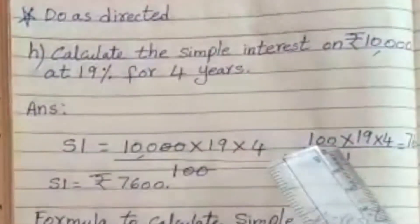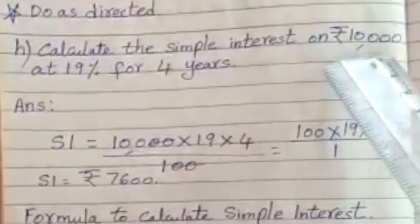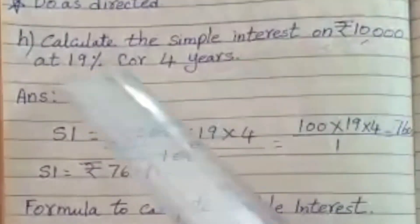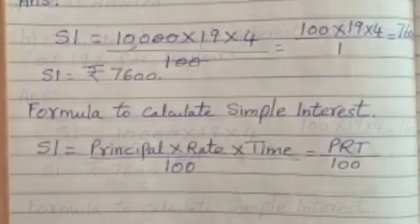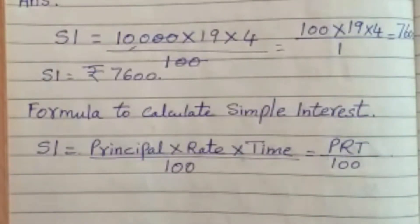Do as directed. Calculate the simple interest on 10,000 rupees at 19% for 4 years. What is the formula to calculate the simple interest?